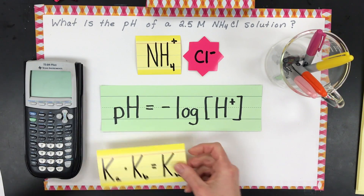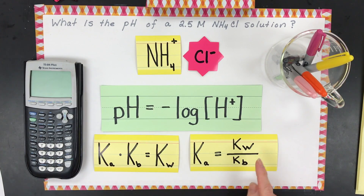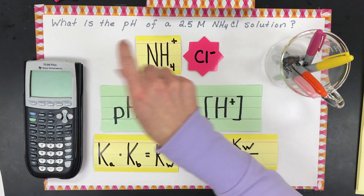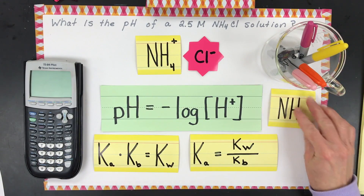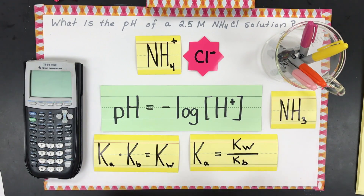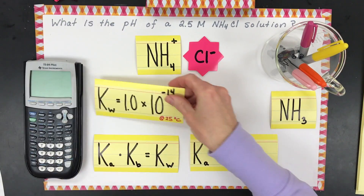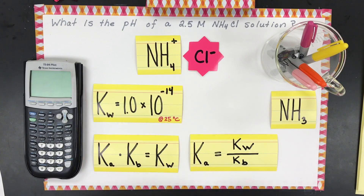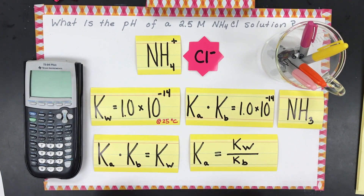Write that one down. To find the Ka, since this is going to act as an acidic salt, we will need to take the Kw and divide it by the Kb for ammonium. Then we'll find the Kb for ammonia, because that's going to be the base. If you are at 25 degrees, the Kw is 1×10⁻¹⁴, and then Kb and Ka, when you multiply them by each other, will equal 1×10⁻¹⁴.